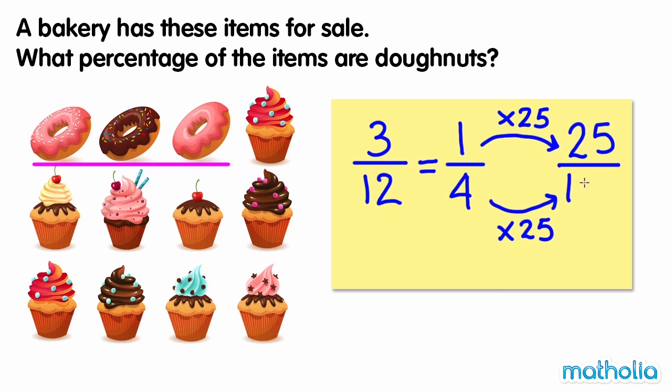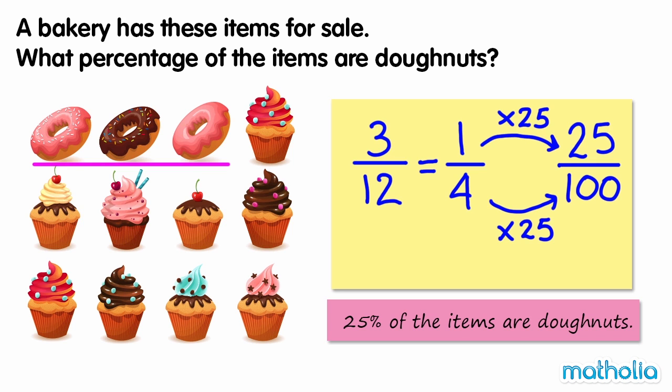One-quarter is equal to 25 one-hundredths. 25 one-hundredths equals 25%. So 25% of the items are doughnuts.